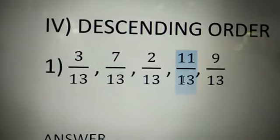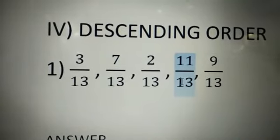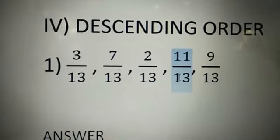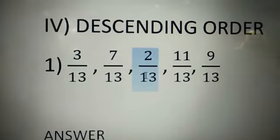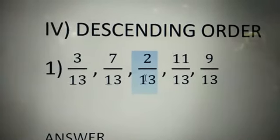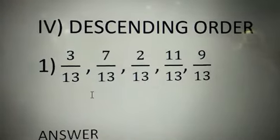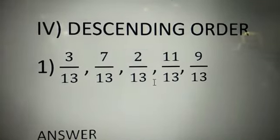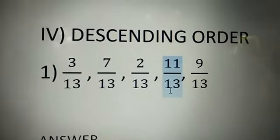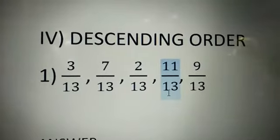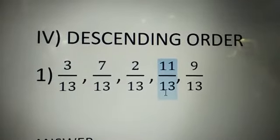We need to arrange the given numbers in descending order. In fractions, whether it is ascending or descending, addition or subtraction, everything — we should concentrate on the denominator first. You see, the denominators all have 13, the same only. So we don't have any problem. We have the same denominator, so we can arrange easily from greater to smaller number.